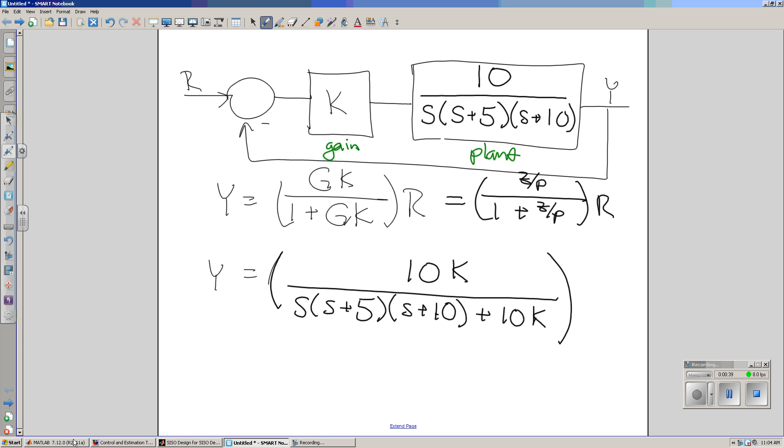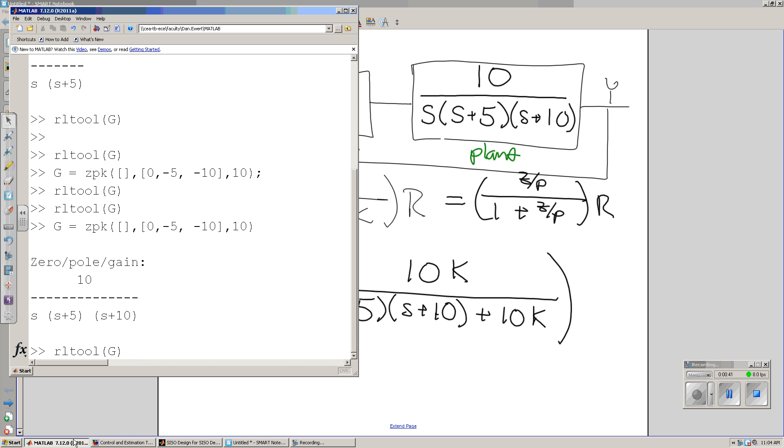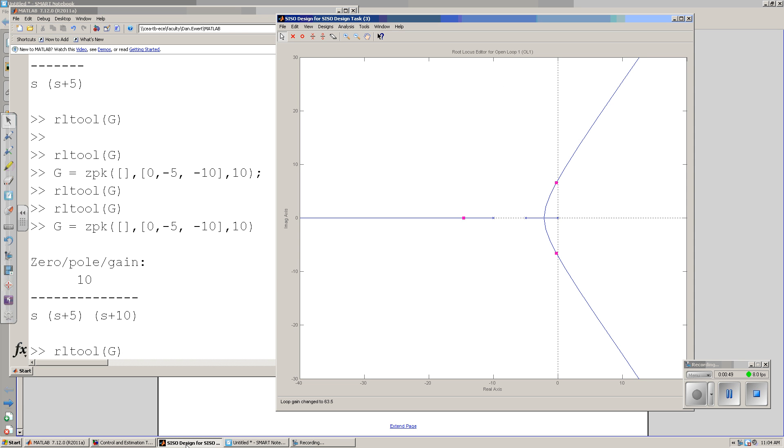One way to do that is in MATLAB. MATLAB has got a neat function called rltool. I can input a system g, tell it I want to plot the root-locus, and what comes up is this graph. This shows the roots of that cubic as k varies between 0 and infinity.